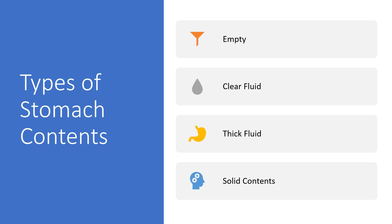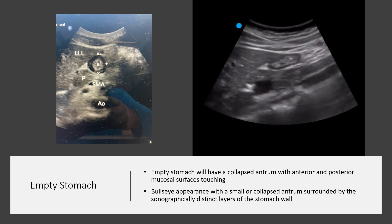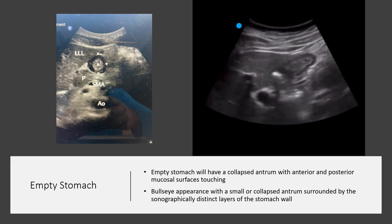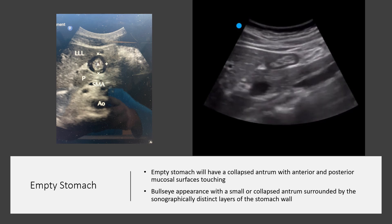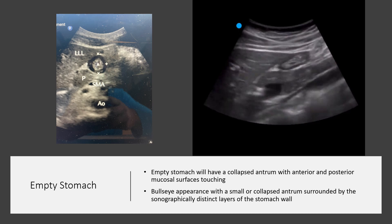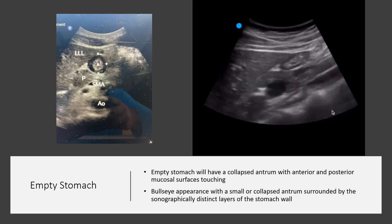The types of stomach contents to identify are: an empty stomach, clear fluid, thick fluid, and solid contents. An empty stomach has a collapsed antrum where the anterior and posterior surfaces are in contact, appearing as a bullseye with a small collapsed antrum surrounded by the sonographically distinct stomach wall layers. Importantly, a small volume of clear liquid is often present in a physiologically empty stomach due to baseline gastric secretions.